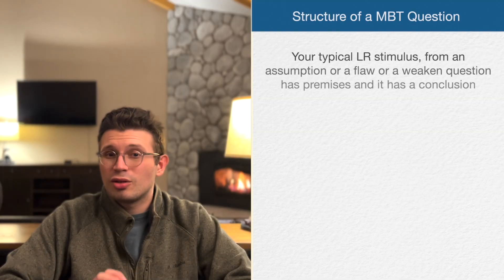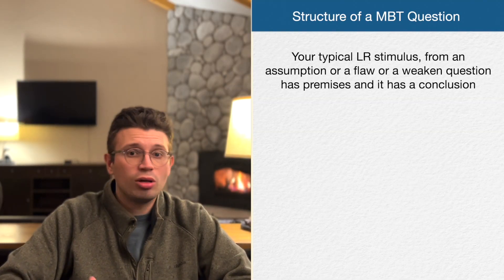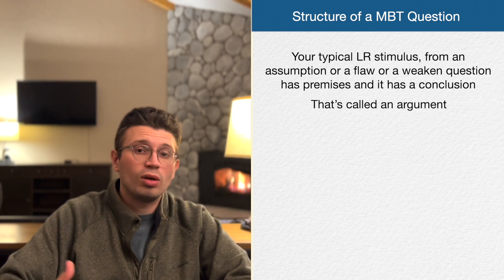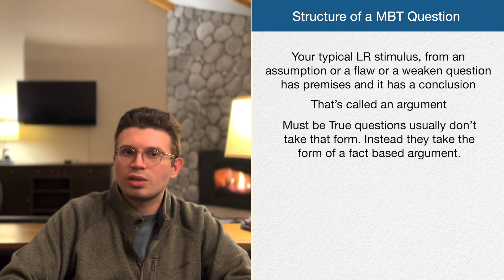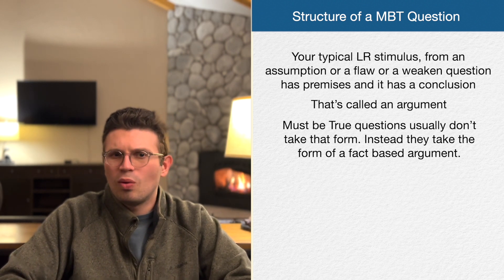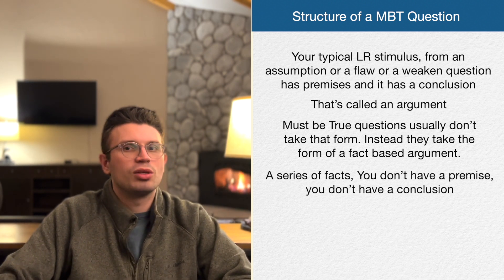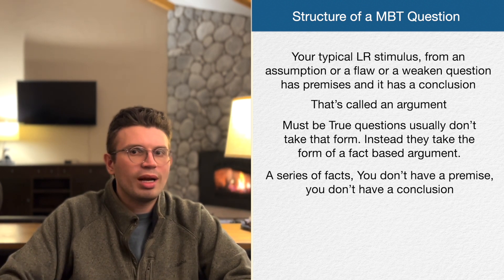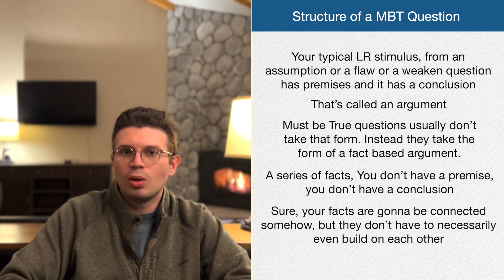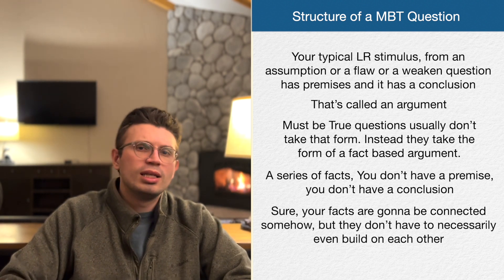Must be true questions show up completely differently than your typical LR stimulus. Your typical LR stimulus — from an assumption, flaw, or weaken question — has premises and a conclusion; it's called an argument. Must be true questions usually don't take that form. Instead, they take the form of a fact-based argument: just a series of facts or statements, with no premise and no conclusion, so no real reasoning. Your facts are going to be connected somehow, but they don't have to necessarily build on each other.